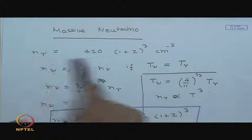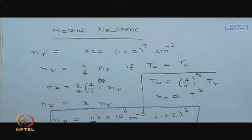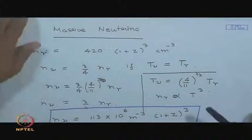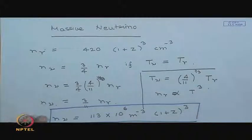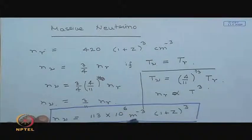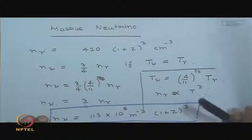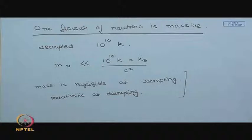In addition to the photon background we also have a neutrino background, and each flavor of neutrino has a number density of approximately 113 × 10⁶ particles per meter cube, and the whole thing scales as (1+z)³. Given this number density of neutrinos present in the universe, we were considering the possibility that one of the neutrino flavors has a mass.